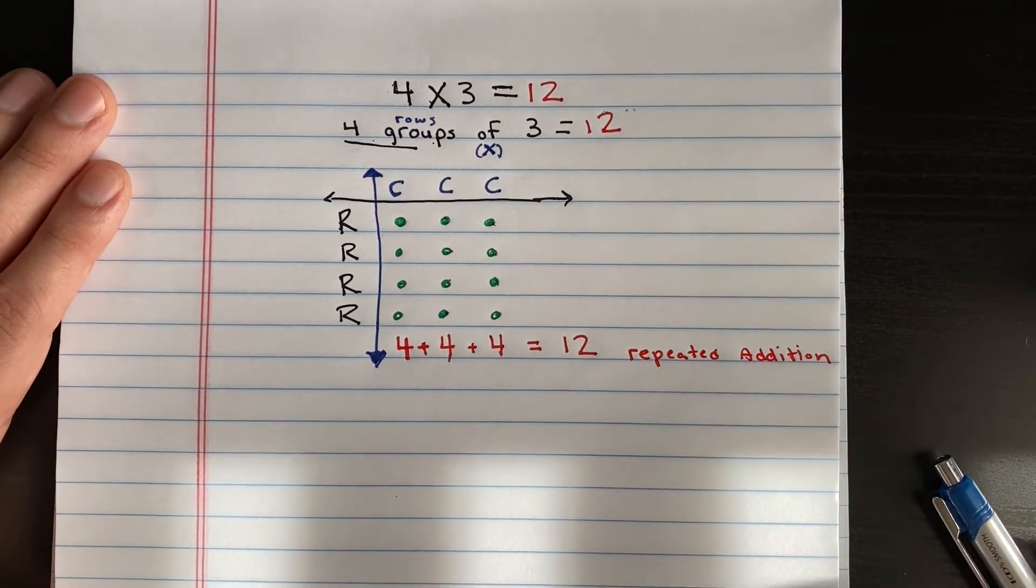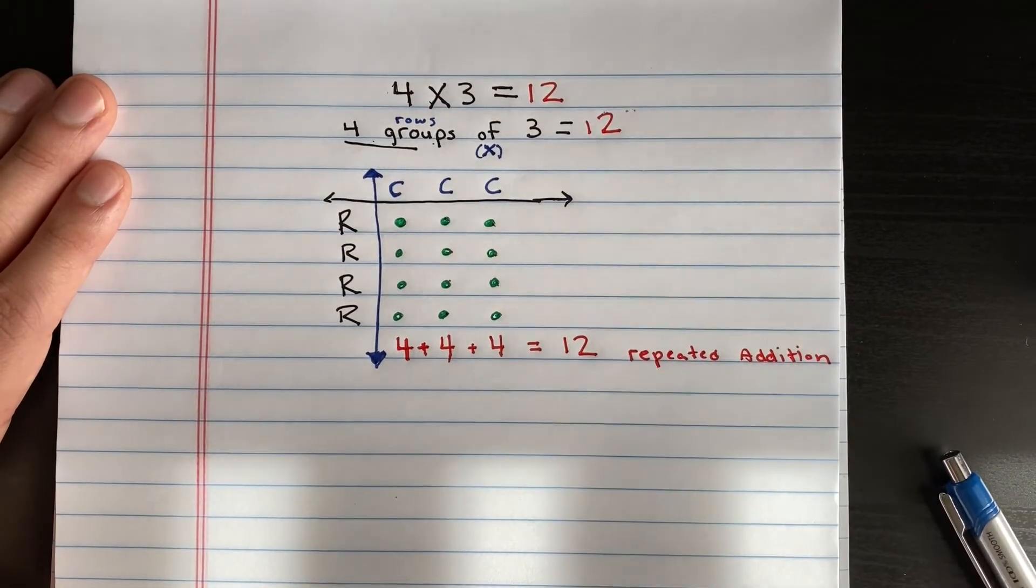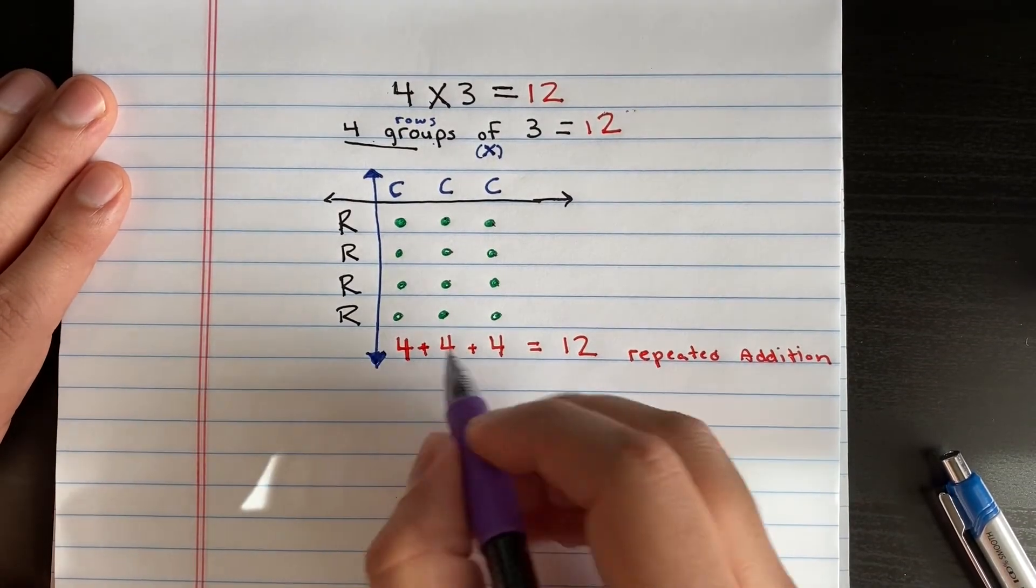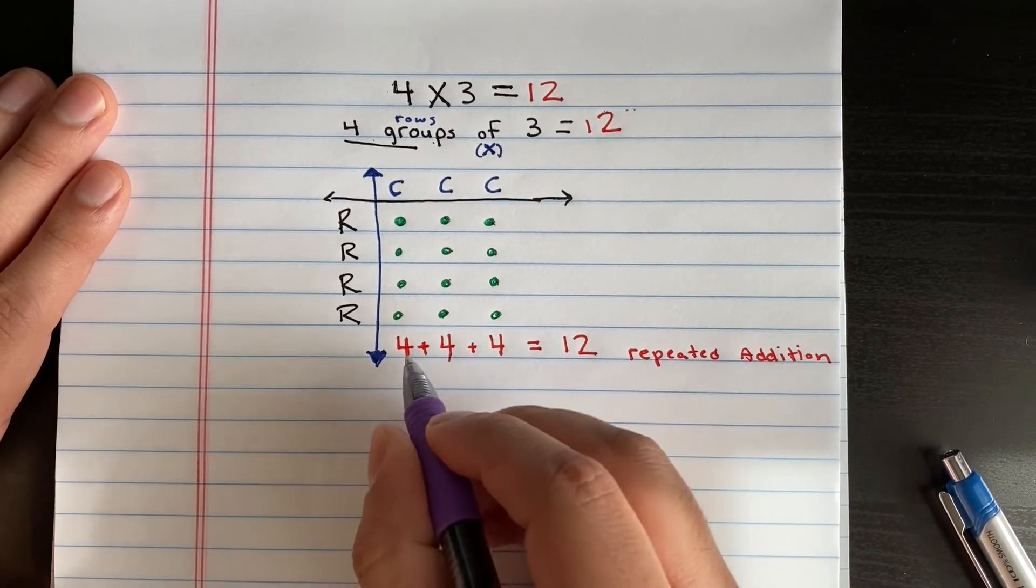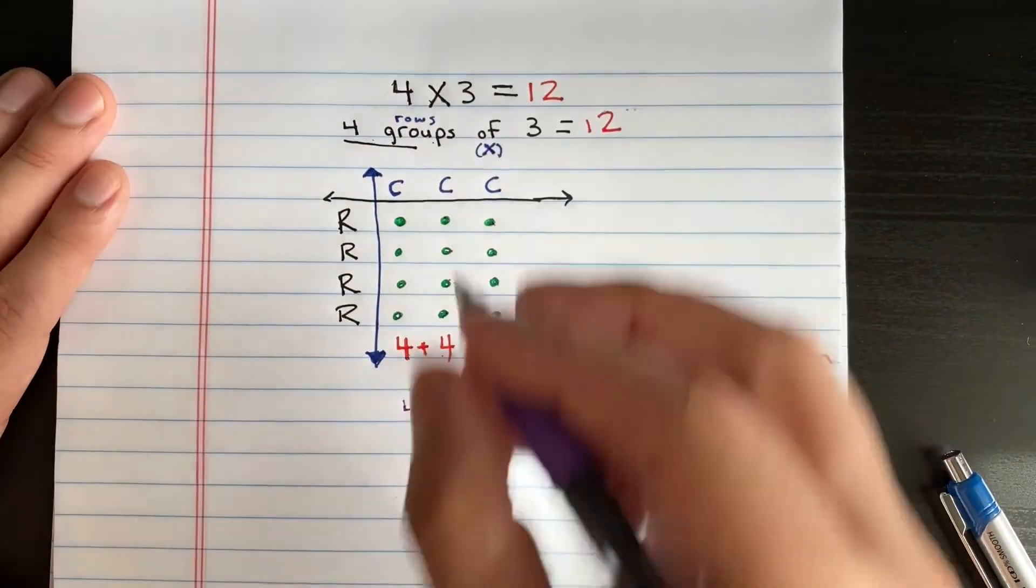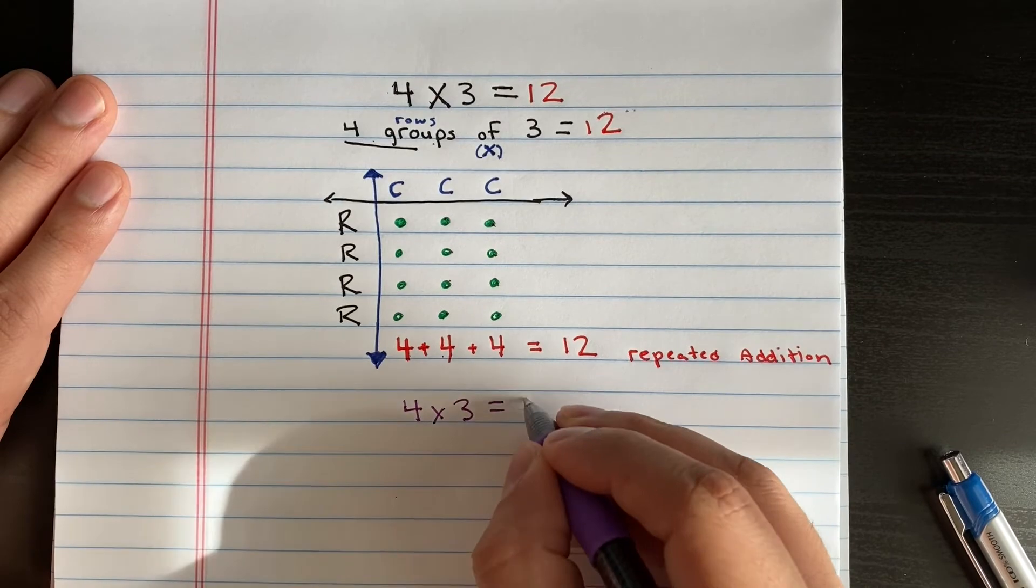Now, what I like to tell my students is to practice our multiplication sentence. So let's go ahead and practice our multiplication sentence. So as you can see, we have the number four. And how many fours are there? One, two, three. So four times three equals twelve.